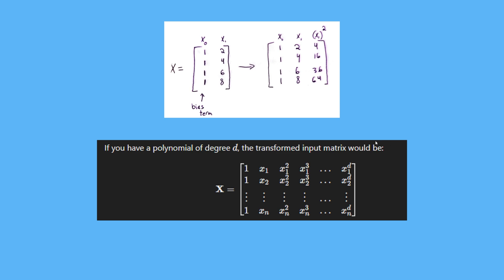We can generalize this equation to account for any degree. If we choose a degree of D, our input matrix has a column of ones, then x1, x2, x3, all the way up until xD. It does get more complex when you have different variables, but for this video we're focusing on just one feature. If you want to have a dataset with multiple features, the thing we're going to use from scikit-learn is able to do that automatically.